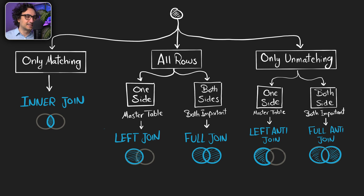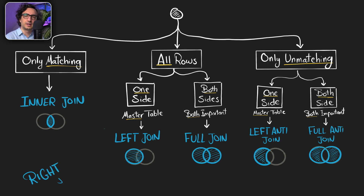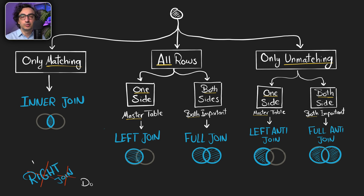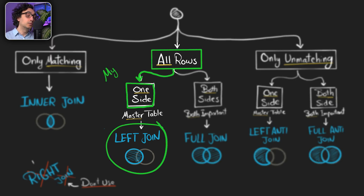So actually, that's it. This is the decision tree that I follow usually as I'm writing a query. You might ask me about the right join — well, I don't have it at all in my decision tree, so I don't use it at all. If I check most of the queries that I write, very often I use the left join. So I can tell you, this is my favorite way on how to join tables.